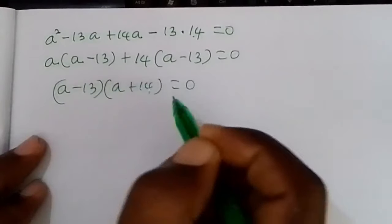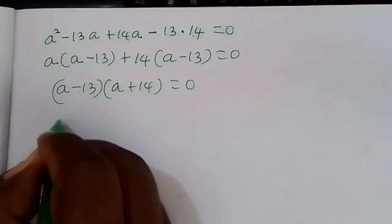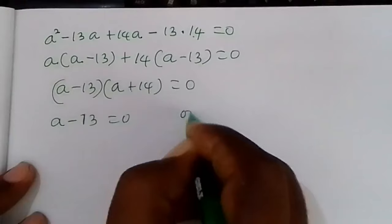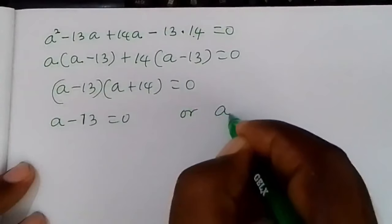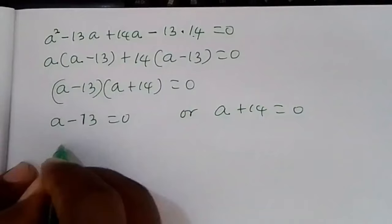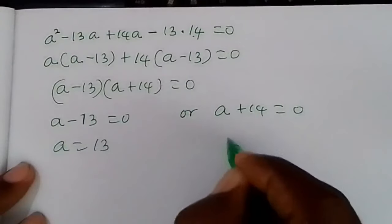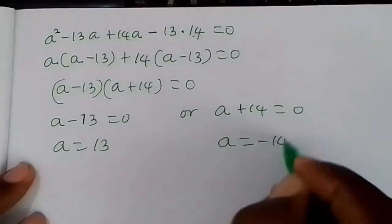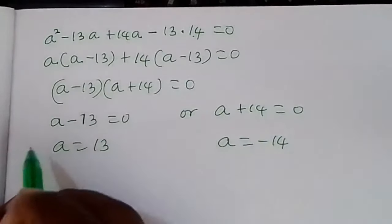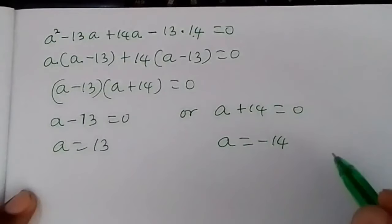So a minus 13 is common, giving a minus 13 times a plus 14 equals zero. By the zero product property: a minus 13 equals zero or a plus 14 equals zero, which means a equals 13 or a equals negative 14. We have two cases.